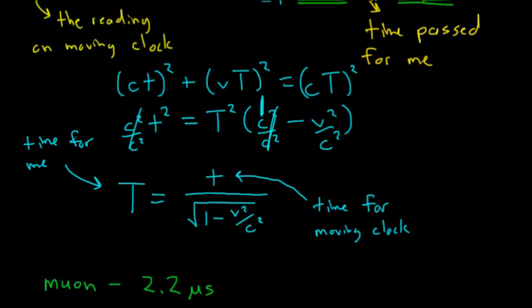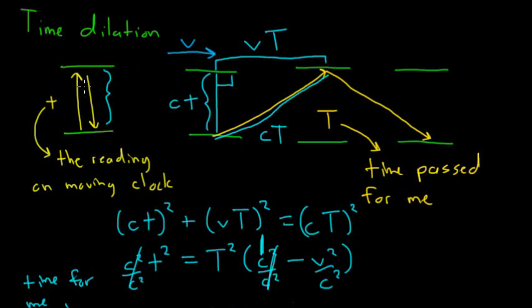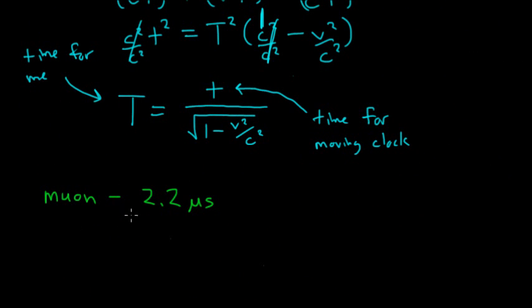And, it's important to note, that this idea that your clock is running slower, this isn't some kind of optical illusion. I could synchronize this clock, this weird light clock, with any sort of mechanical clock, or with the decay rate of particles, like the muon,